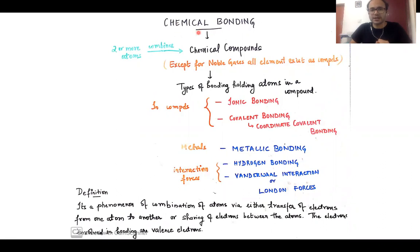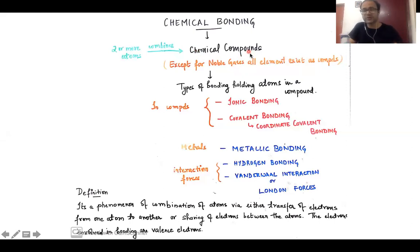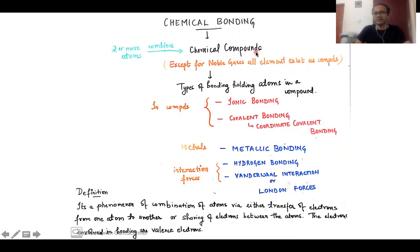When the name chemical bonding comes to mind, it is basically dealing with chemical compounds. A compound is a combination of two or more atoms that combine to give a chemical compound. If you look at the various elements in the periodic table, you find that except for noble gases, all elements exist in a compound form because they are not stable in their free state.